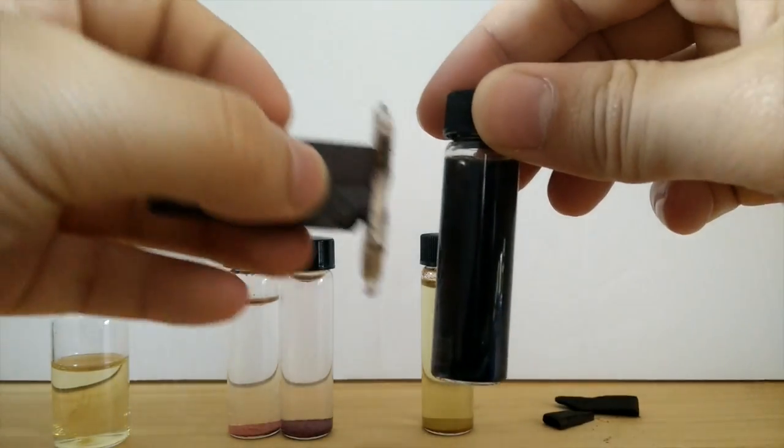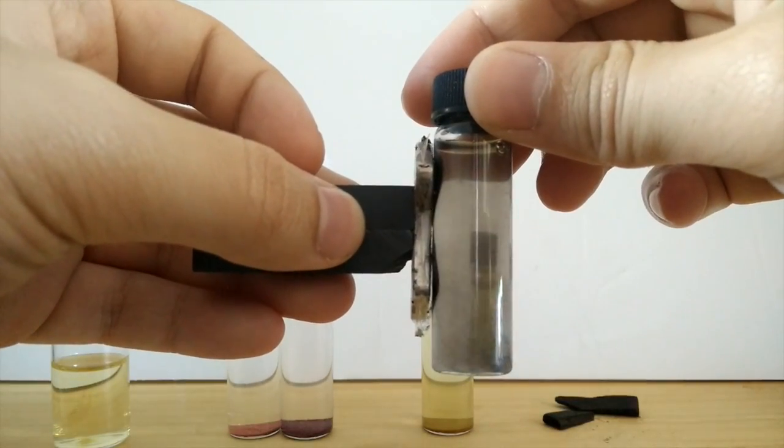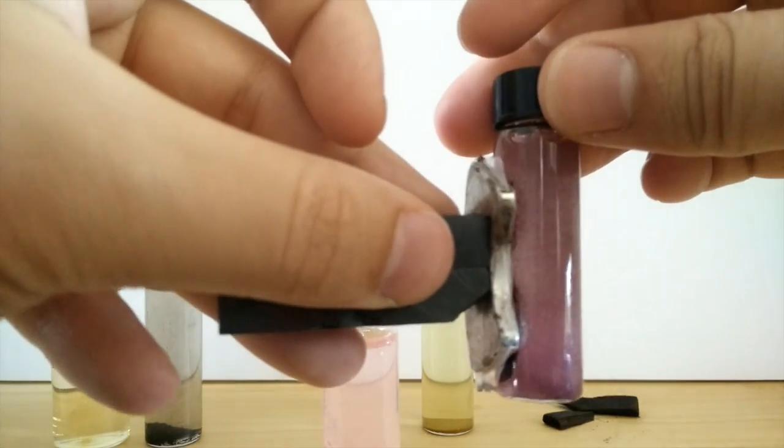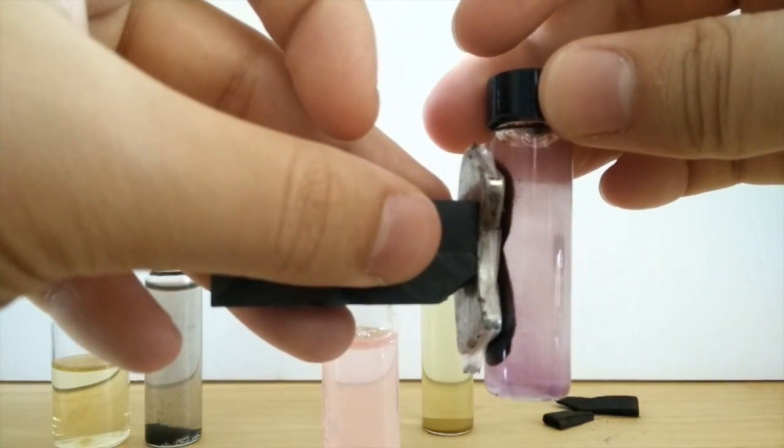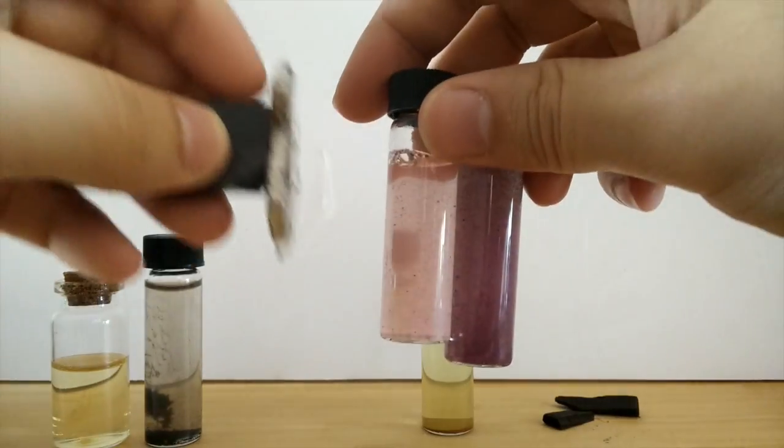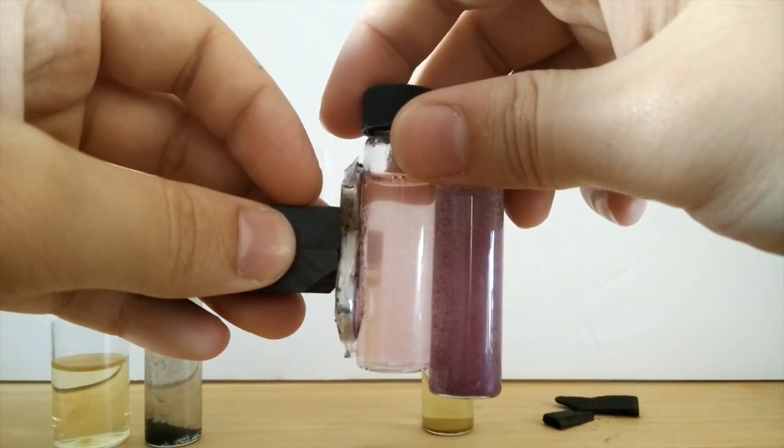In future videos I'll be showing how to use these and other paramagnetic materials to make all kinds of interesting nanoparticles. Specifically I'll be showing how to take the regular dark nanoparticles and coat them in a fluorescent dye so you get colorful magnetic glowing nanoparticles. In this case I have orange and purple.